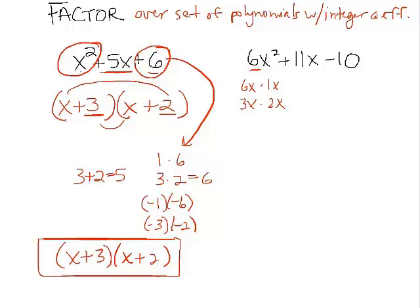So we have to decide which of those we want to try out. And then we also have to deal with this negative 10 down here. What would multiply to negative 10? How about negative 10 and 1? Or negative 1 and 10? How about negative 2 and 5? Or negative 5 and 2?